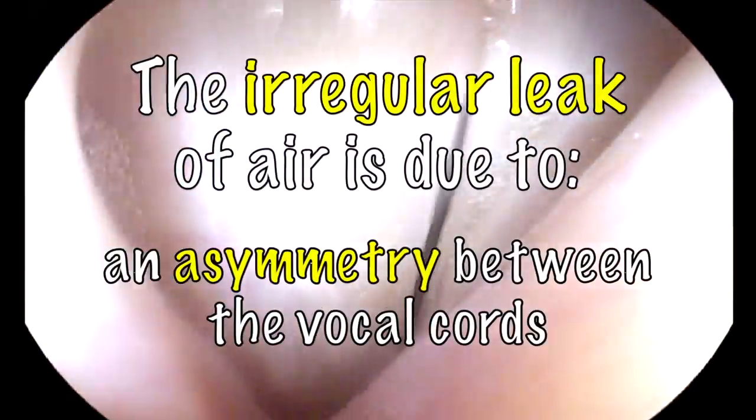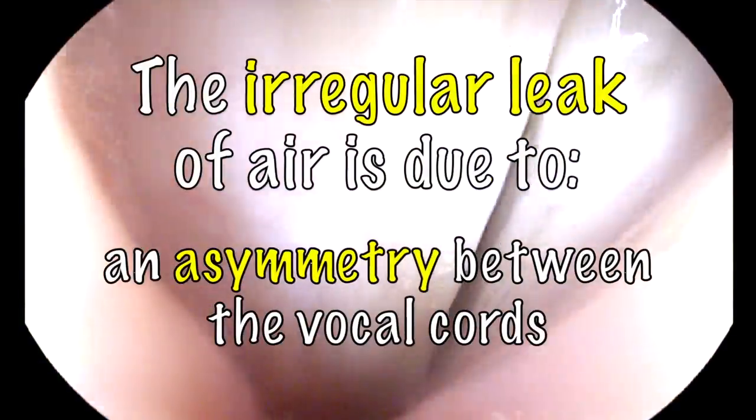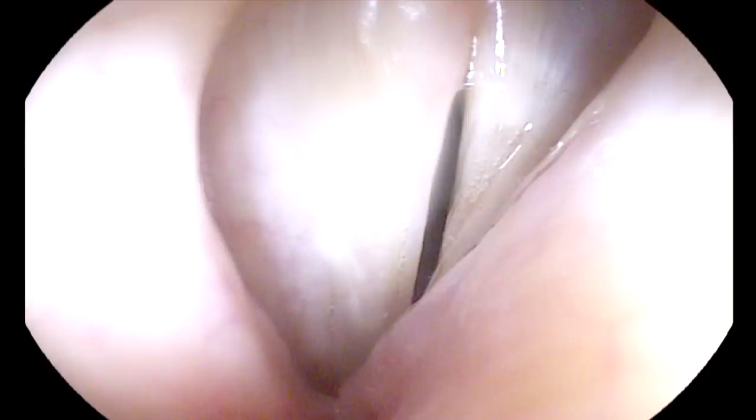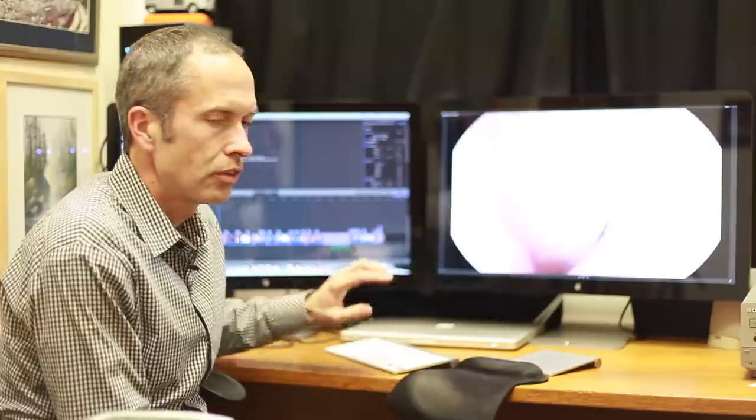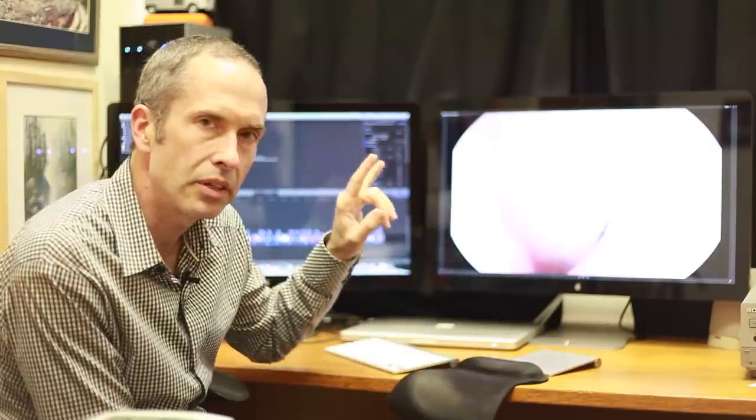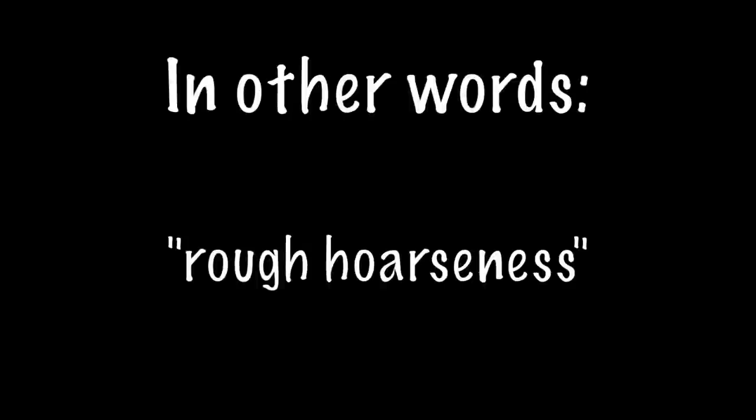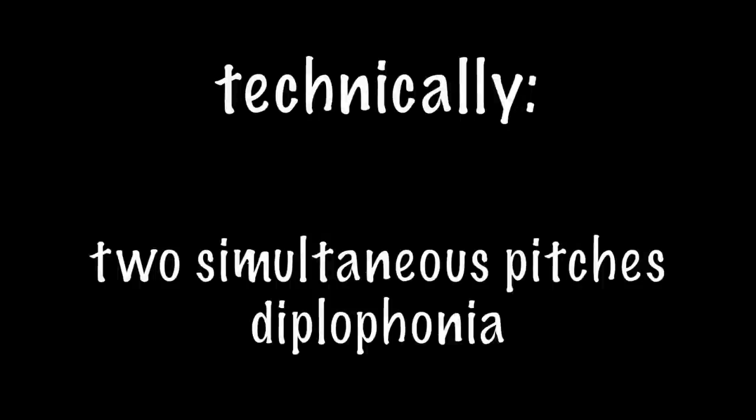Now, the irregular leak of air is due to some asymmetry, some difference between vibrating segments. So we hear this quality, and what we're really hearing is two pitches at once. We could call this a rough hoarseness. The technical term for this would be diplophonia. We're hearing two pitches, diplophonia, two pitches at once.